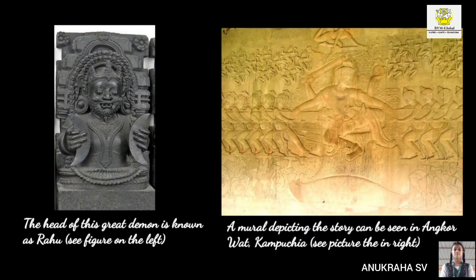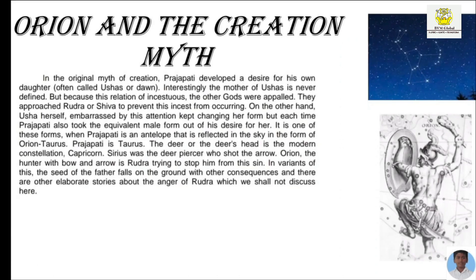In the original myth of creation, Prajapati developed a desire for his own daughter. Prajapati also took the equivalent male form out of his desire for her. It is one of these forms — when Prajapati is an antelope — that is reflected in the sky in the form of Orion and Taurus. Prajapati is Taurus. The Dais head is the modern constellation Capricorn. Sirius was the Dais head who shot the arrow, and Orion is the hunter with the bow and arrows trying to stop him.